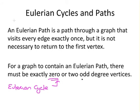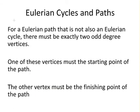But it's possible to be an Eulerian path without being an Eulerian cycle. For an Eulerian path that is not also an Eulerian cycle, there must be exactly two odd degree vertices. One of these must be the starting point of the path, the other must be the finishing point of the path.